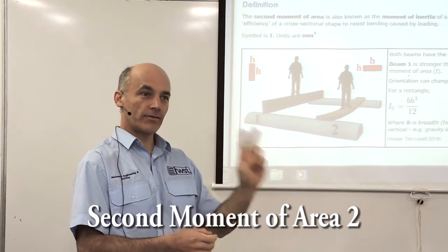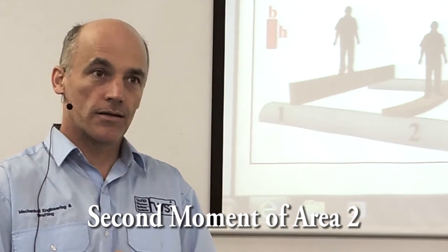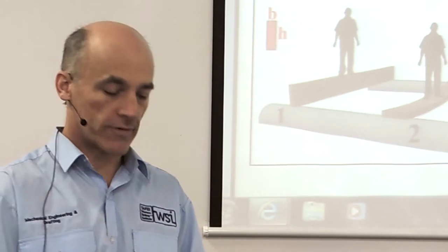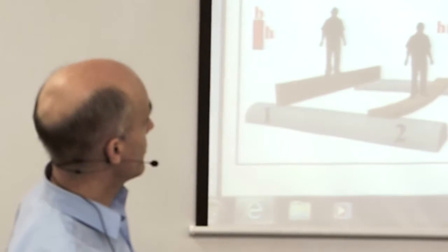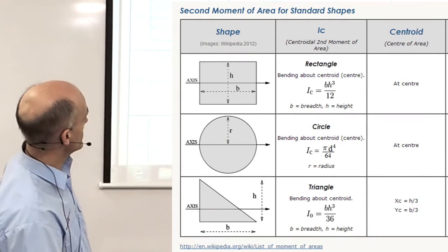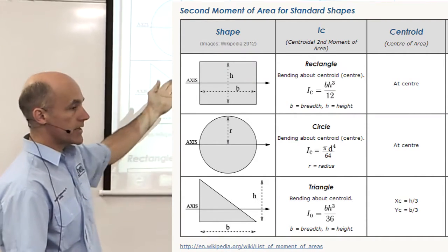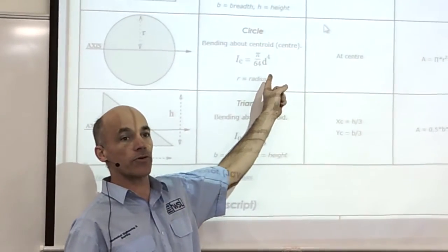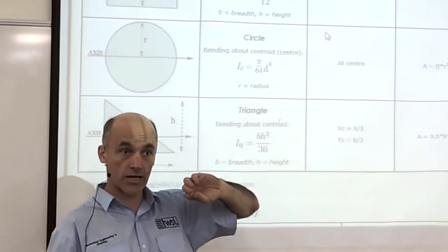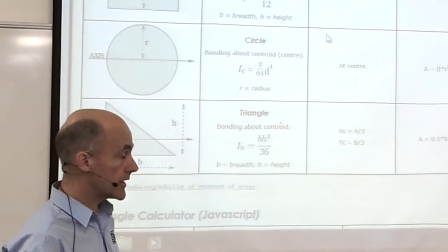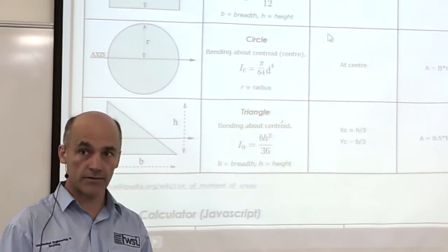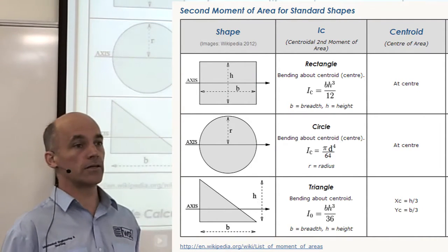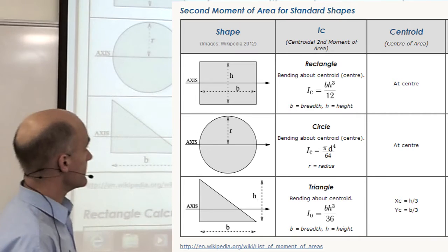Second moment of area, part 2. What happens when the shape we're trying to calculate is not a perfect rectangle, perfect triangle, or perfect circle? We have formulas for each of these. The rectangle is bh cubed on 12. The circle is pi d to the 4th on 64 - a little bit different to J, which is pi d to the 4th on 32. If it's in bending, it's pi d to the 4th on 64. And the triangle is bh cubed on 36 instead of 12.